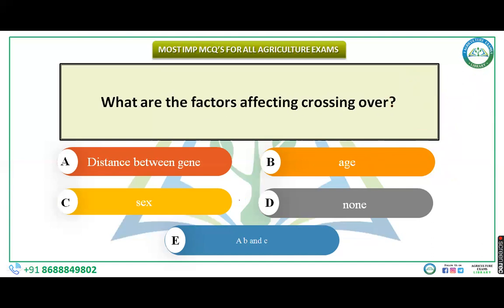Crossing over is the opposite phenomenon of linkage. What are the factors affecting crossing over? Options: distance between genes, age, sex, or all. Greater the distance between two genes, greater the crossing over. As age increases, crossing over decreases. In terms of sex, crossing over is less in males compared to females. So all three factors affect crossing over — the correct answer is A, B and C.